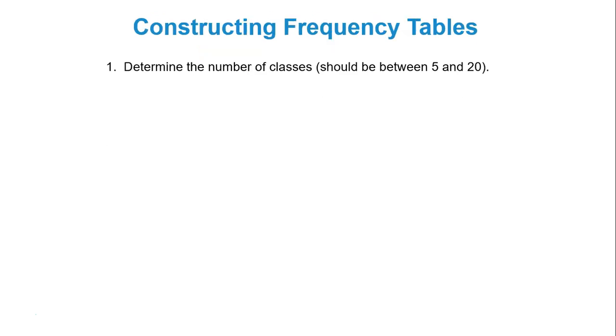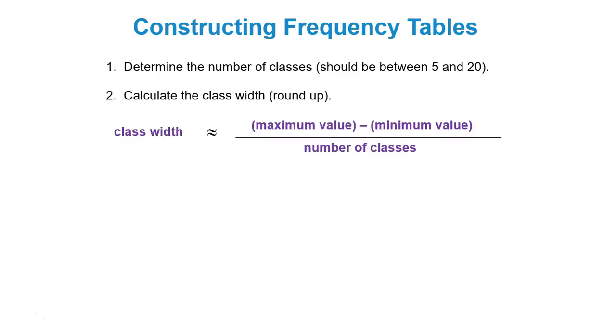So when you construct a frequency table you need to first determine the number of classes. If they don't tell you how many classes you need, then use a number anywhere between 5 and 20.